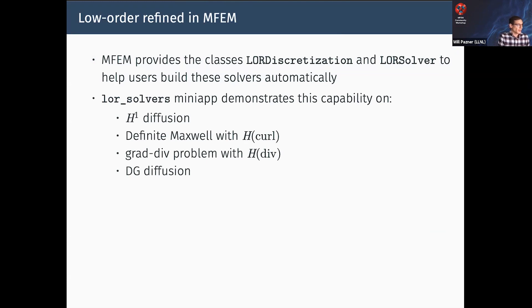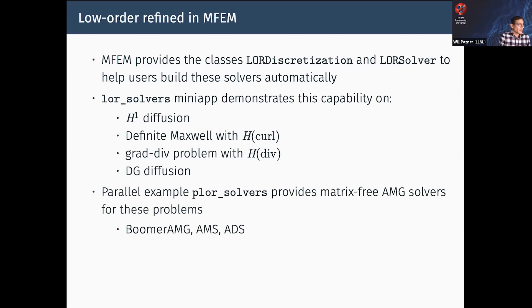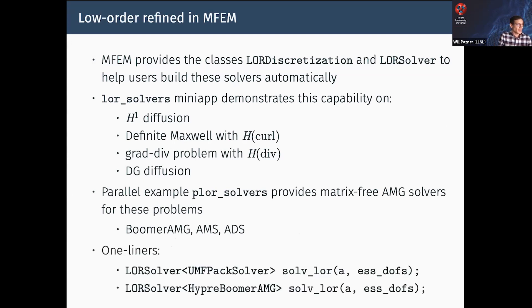In serial, it will use a direct solver for the low-order problem - why not? But in parallel, if you really want a scalable solver, we can use Hypre. You can use BoomerAMG or AMS and ADS and get a truly scalable solver in parallel. Constructing these is a one-liner, right?